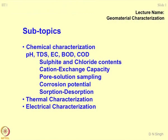I continue with geomaterial characterization, specifically chemical characterization. We have discussed how to determine pH, TDS (total dissolved solids), electrical conductivity of soil solutions, BOD and COD, sulphide and chloride contents, cation exchange capacity, and pore solution sampling. Today's lecture will cover most techniques used for pore solution sampling, followed by corrosion potential of soils, sorption-desorption, thermal characterization, and electrical characterization. We are still on the chemical characterization part.